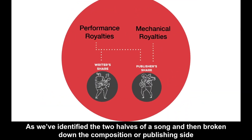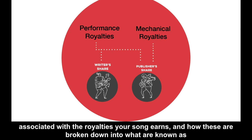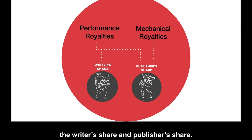As we've identified the two halves of a song and broken down the composition or publishing side of that song and the royalties you earn, the next important part to understand is the ownership shares associated with the royalties your song earns and how these are broken down into what are known as the writer's share and the publisher's share.